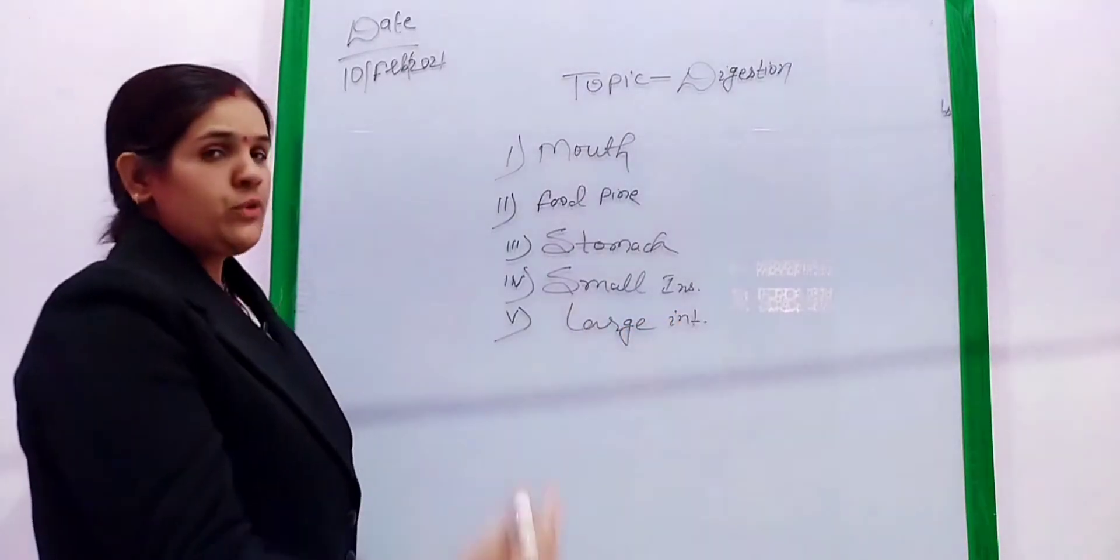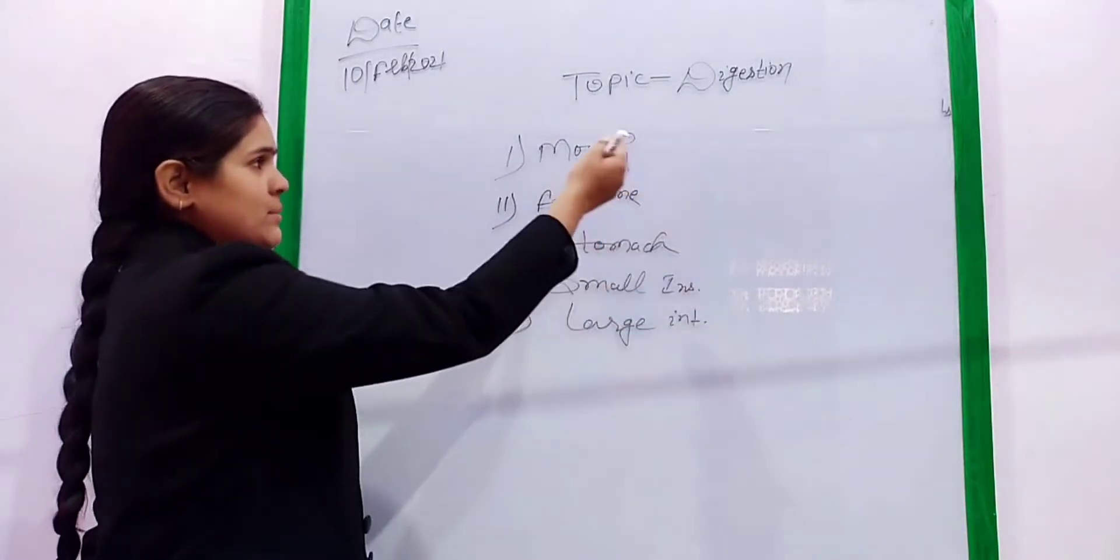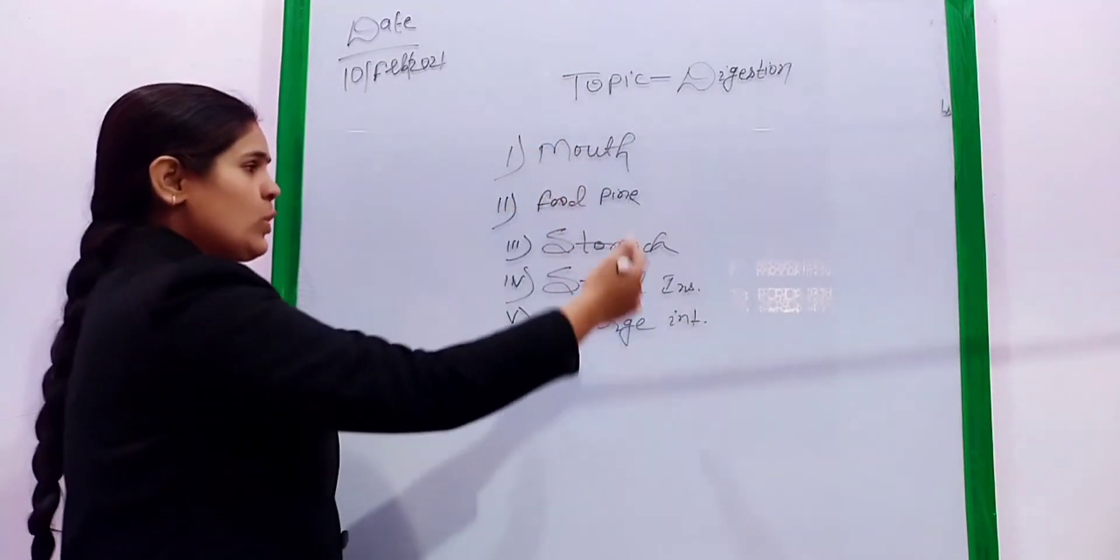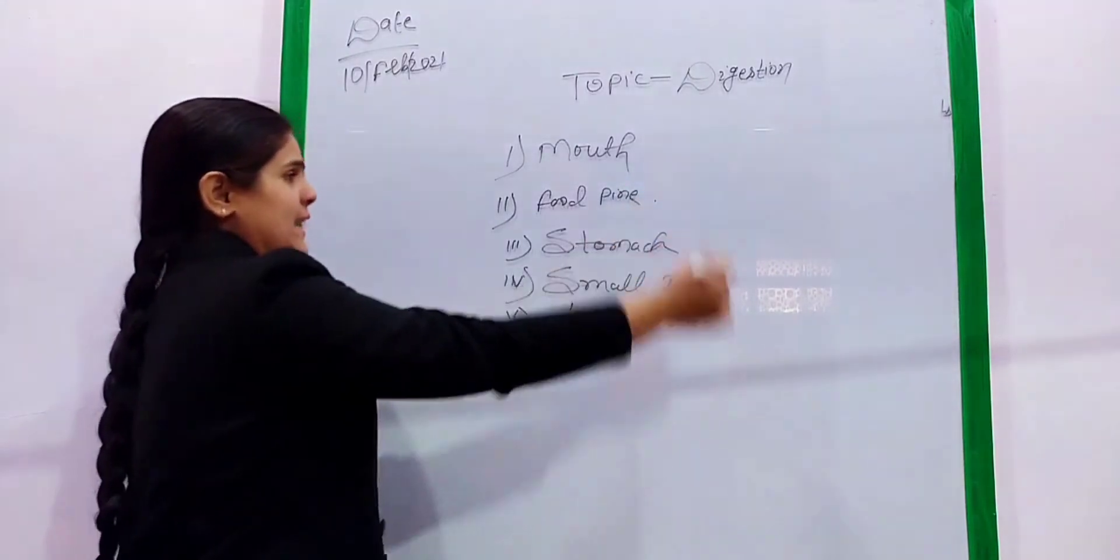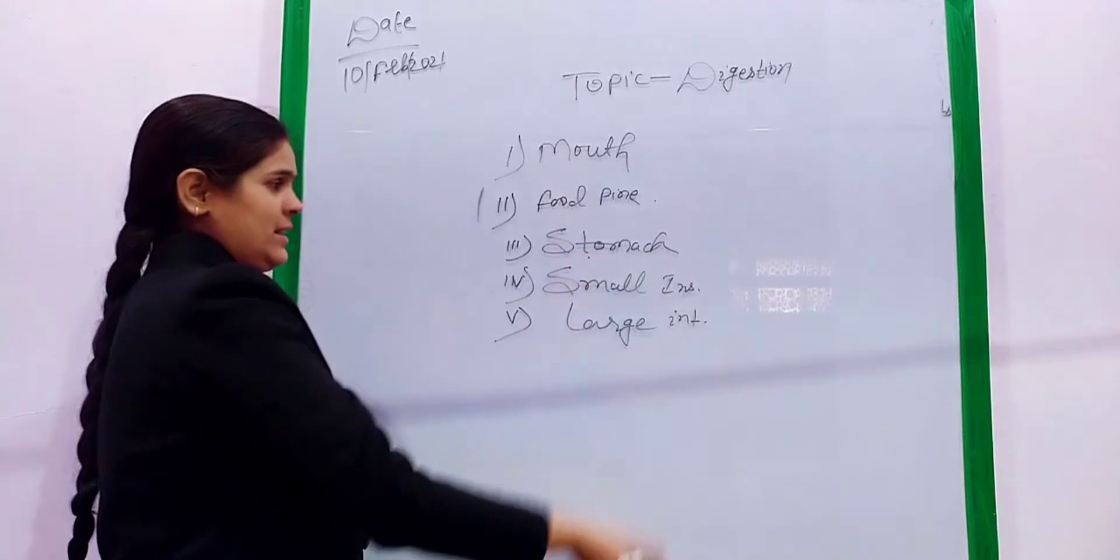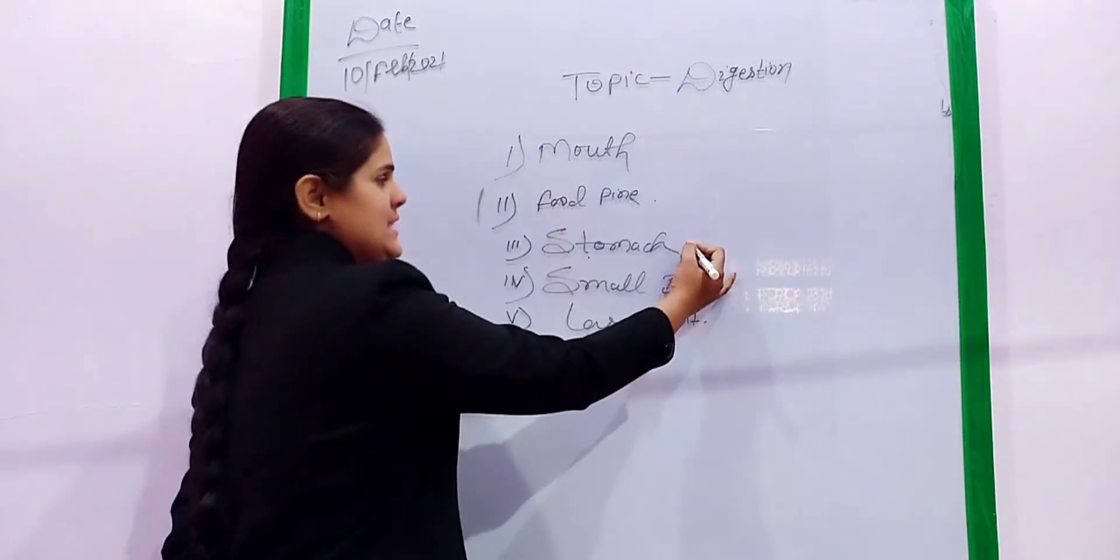First of all, food enters the mouth and comes into the food pipe, which is also called the esophagus. Then food comes into the stomach. Here protein is digested.